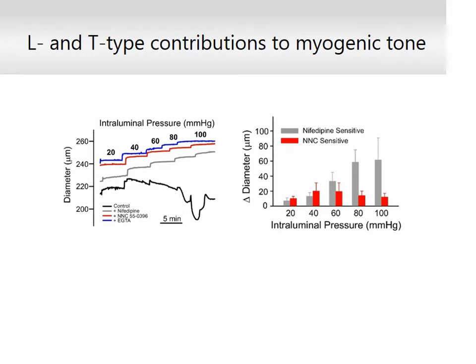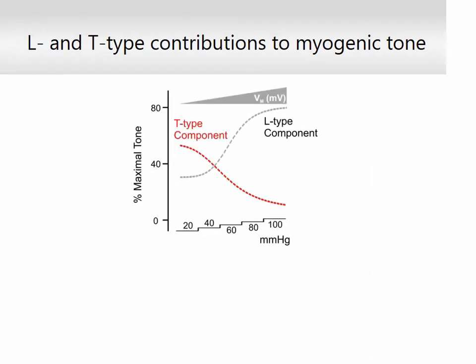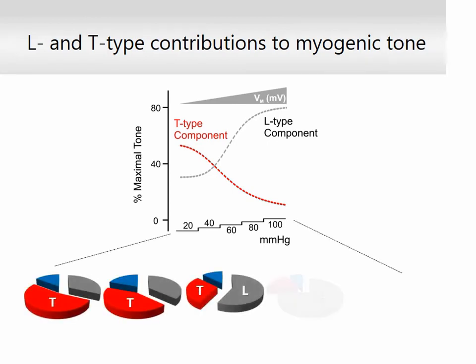The L-type component followed a sigmoidal pattern that reached a maximum at high pressure values. In comparison, the T-type component displayed a Gaussian pattern and peaked at pressure values between 40 and 60 mmHg. Calculation of percentage contribution to maximal tone unraveled a dynamic contribution of both conductances to the development of myogenic tone in a pressure- and voltage-dependent manner.